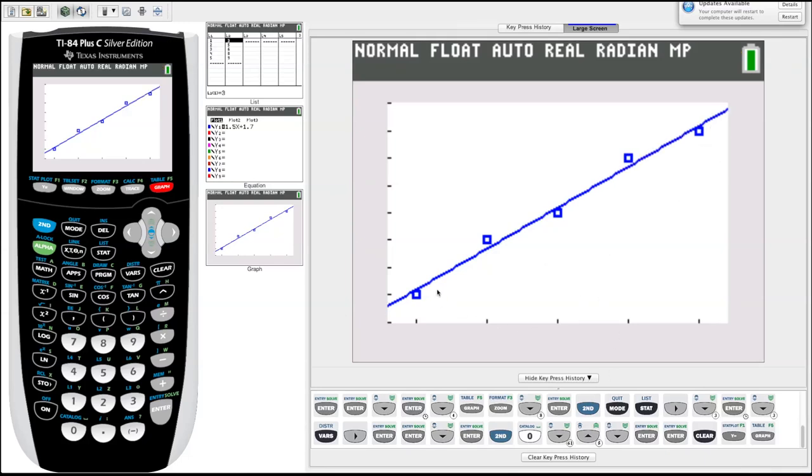Nice linear regression line. I can see you can use that to predict other values, etc. So that's how you graph your regression equation onto your scatter plot.